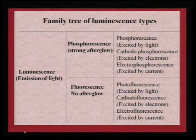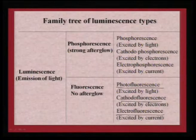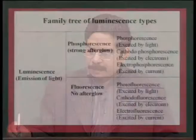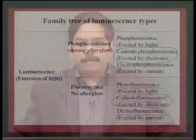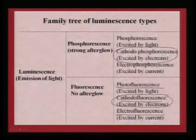One subset is phosphorescence excited by light; cathodophosphorescence when excited by electrons; electrophosphorescence when excited by current. The same is true for fluorescence: you have electrofluorescence, cathodofluorescence, and photofluorescence. The category of light emission comes from whatever the initiating process is, and cathodophosphorescence or cathodofluorescence is a well-established one — basic to CRT tube applications, which I will cover in the next few slides.